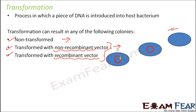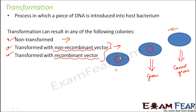We allow all of them to grow in antibiotic medium. By default, the host bacteria does not have resistance against the antibiotic, so it will not be able to grow and will die. The second and third — both of which have transformed — will be able to grow, because they have taken up the vector.